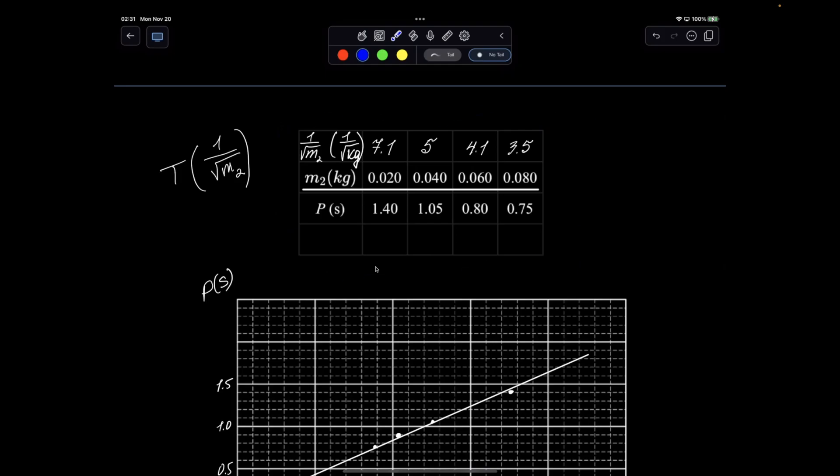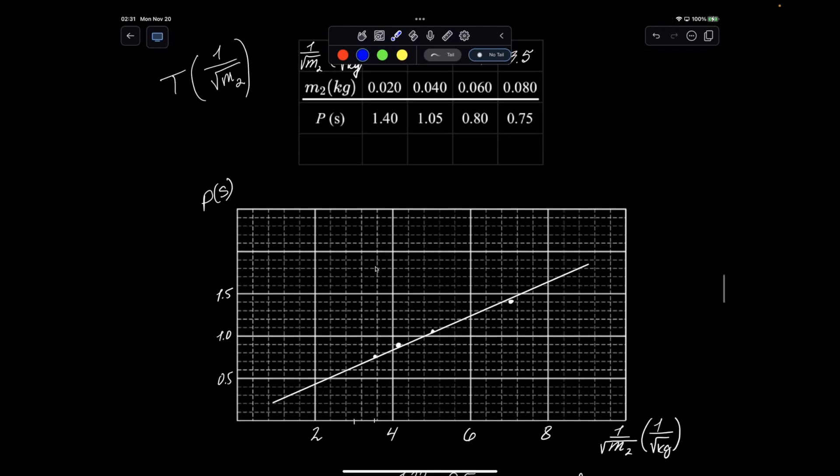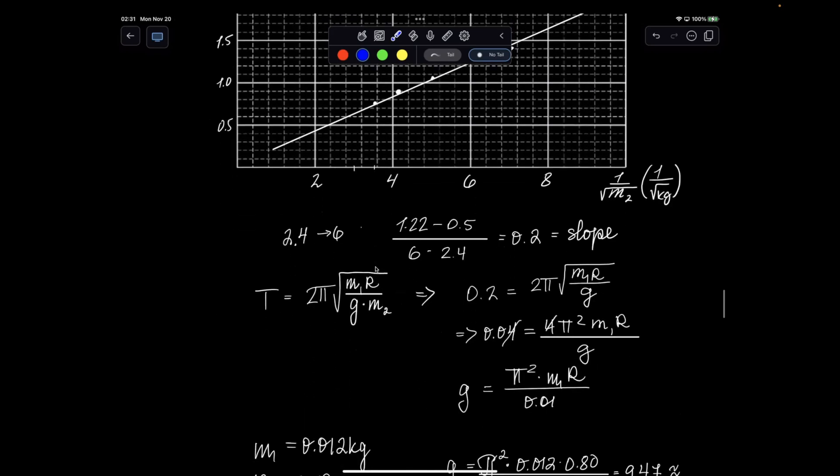You can copy from the screen if you want, but remember to earn credit, you need to produce your own graph. So make sure you graph it and find the slope. So for me, I found the slope to be 0.2. And then I said 0.2 equals 2 pi root of m1 r over g.